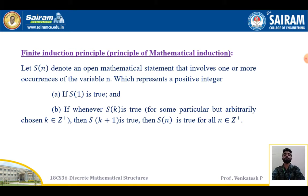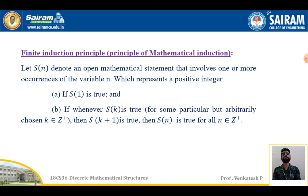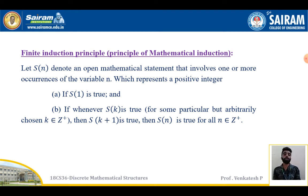Where the variable n will be called a positive integer. To show that S(n) is true we must satisfy the following conditions. First condition: S(1) is true, that is the statement S(n) is true for n = 1. Second: we assume S(k) is true, then we replace k with k+1, that is we prove S(k+1) is true. Then we can conclude S(n) is true for all positive integers n belonging to Z+.